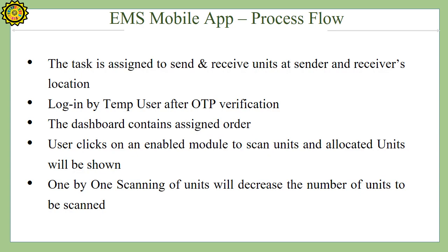Process flow for EMS Mobile App: The task is assigned to send and receive units at the sender and receiver's location. Login is done by a temporary user after OTP verification. The dashboard contains the assigned order. The user clicks on an enabled module to scan units and allocation of units is done. One by one scanning of units decreases the number of units to be scanned.